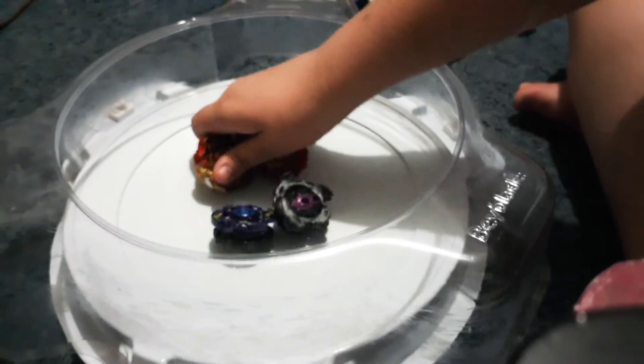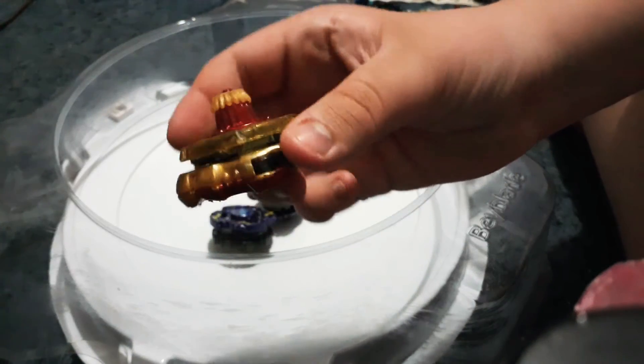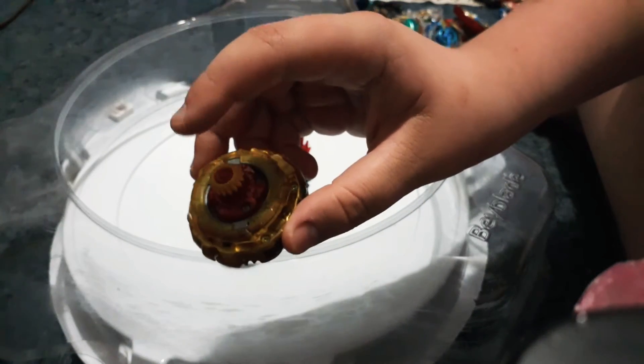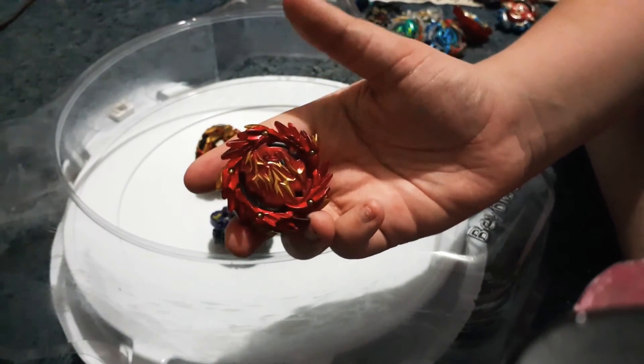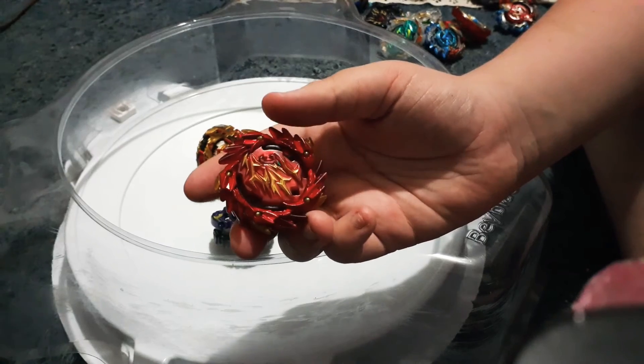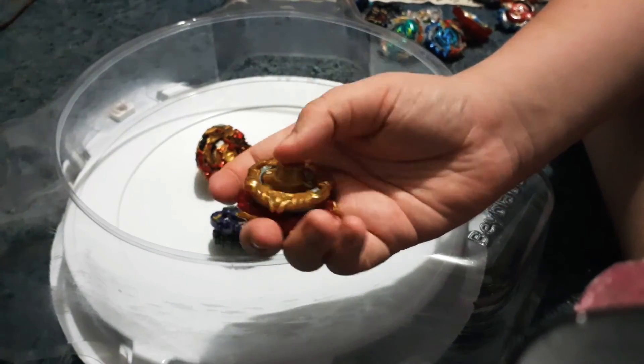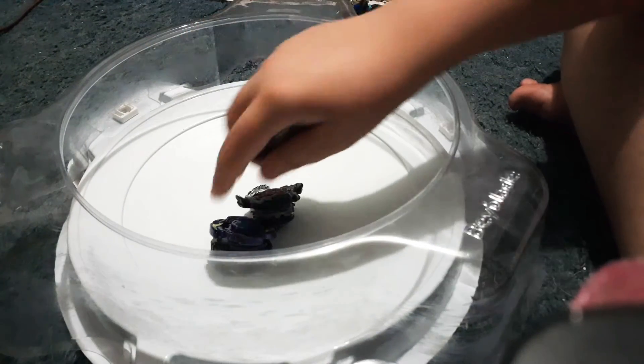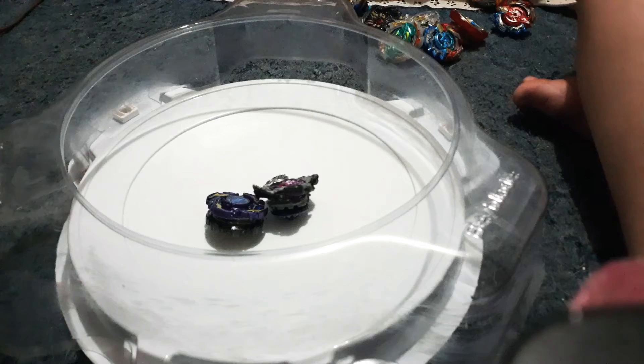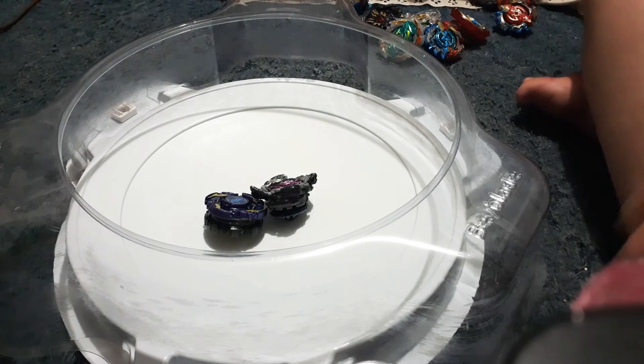And then also, we have Hokori's Combo, which is Chozy Spriggan 1-Meteor Anchor versus my Combo, which is Shining Amaterios Zero Angle Revolve. So first things first, we'll do Jimmy versus Hikaru, and let's get into it.